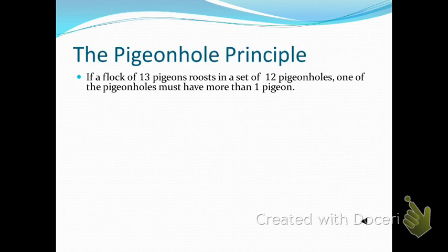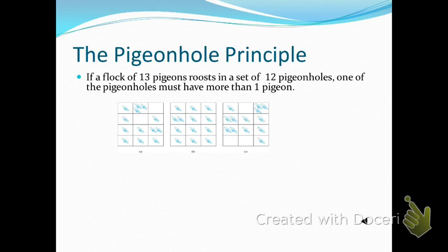What does the Pigeonhole Principle say? Let's start with an example: if a flock of 13 pigeons roost in a set of 12 pigeon holes, one of the pigeon holes must have at least more than one pigeon. In the best case, each hole has one pigeon — that's 12. But since we have 13, at least one must go into another hole. There may be empty pigeon holes, but because of those empty holes, at least one hole will have more than one pigeon.